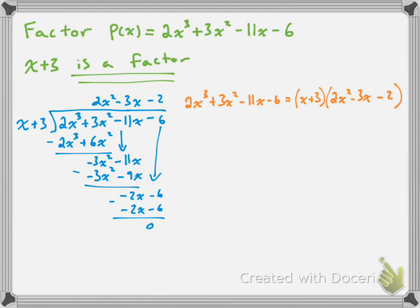If the quadratic is factorable, it factors into (2x + something)(x + something), where the two numbers at the end multiply to give −2 — so possibilities are +1 and −2, or −1 and +2. Trying (2x + 1)(x − 2), we do get the trinomial 2x² − 3x − 2. So the full factorization is (x + 3)(2x + 1)(x − 2). That's the process for factoring a polynomial expression of degree 3 or higher. Take care, everybody.